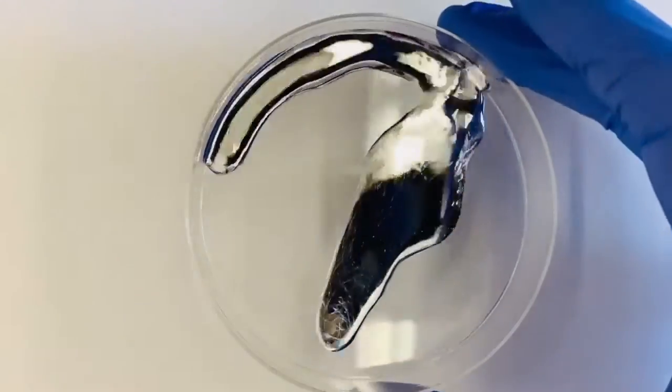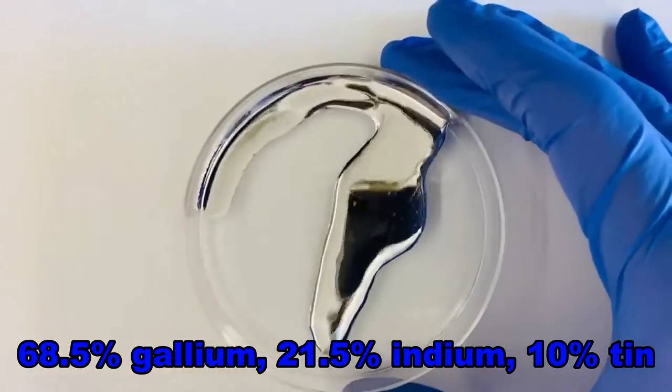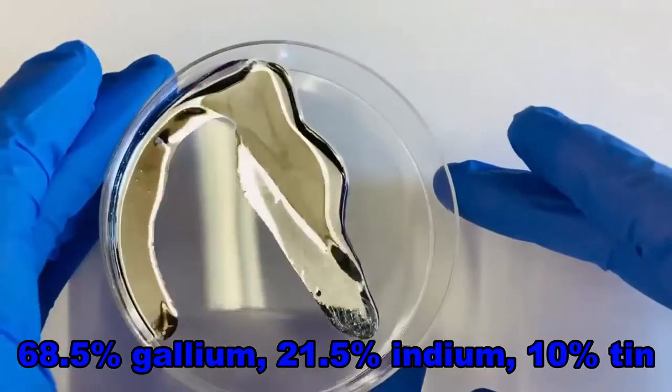Gallinstan is a mixture of three metals. It's 68.5% gallium, 21.5% indium, and 10% tin.